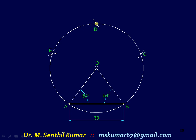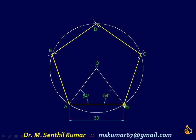Next, with E as center get point D, and with D as center get point C. Finally, draw lines joining B, C, D, E, and A, thereby getting a regular pentagon of side 30 mm. An added benefit of this method is that you also directly obtain the center O of the pentagon.